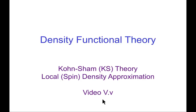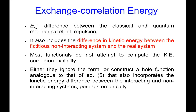I'd like to explore in more detail an approximation I alluded to in the last video: the local spin density approximation when implemented in Kohn-Sham theory. That'll help us understand how modern density functionals work and how they're employed. The exchange-correlation energy is the difference between the classical and the quantum mechanical electron-electron repulsion.